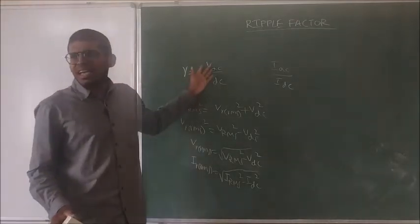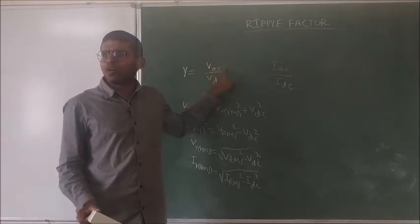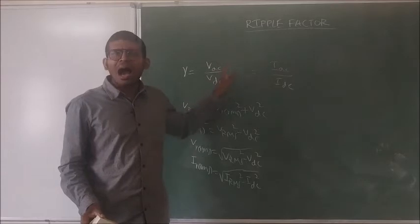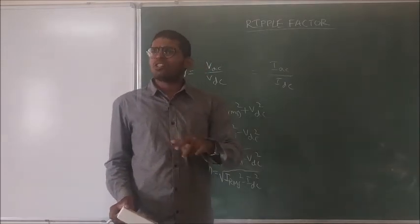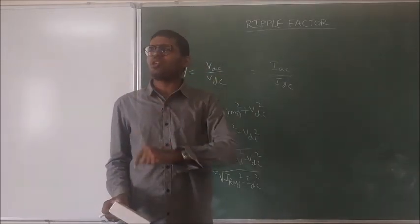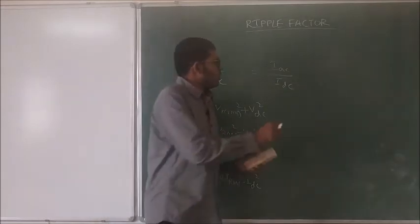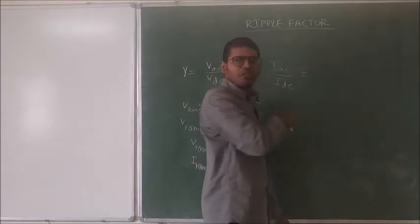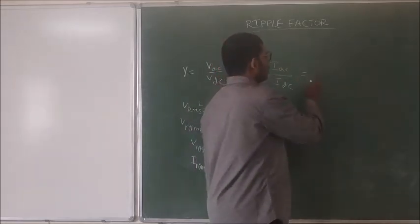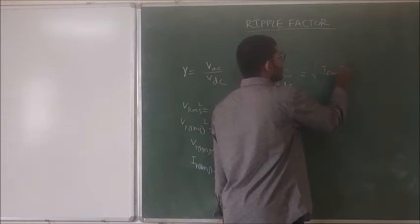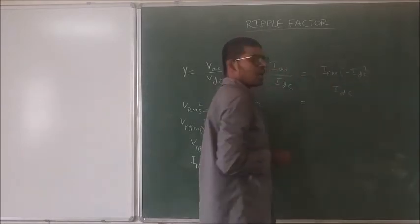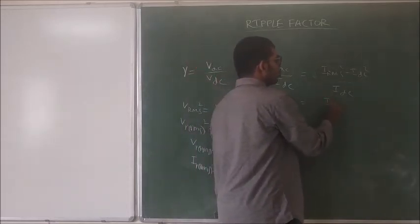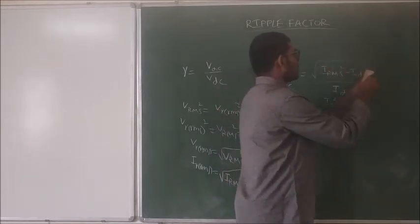So we can calculate either the voltage AC component in the rectified output divided by voltage DC component, or the current AC component divided by current DC component. Both values should give the same ripple factor. I have taken the current IAC for the half wave rectifier. So IAC by IDC equals the square root of (I_RMS squared minus I_DC squared) divided by I_DC. For the half wave rectifier, I_RMS is I_M by 2.